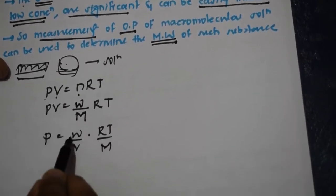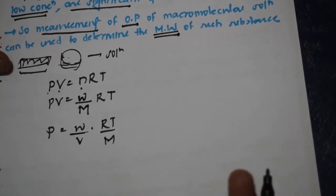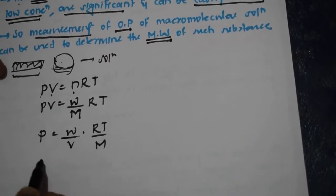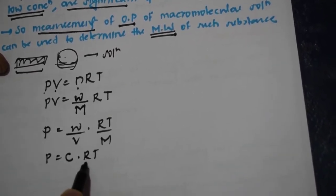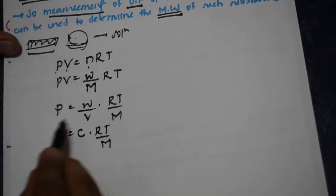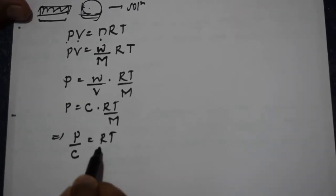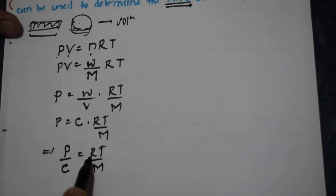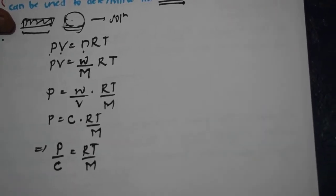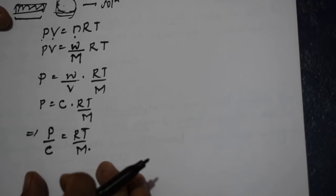W divided by V is weight divided by volume, that is grams per 100 ml. If we take volume as 100 ml, we get concentration into R into T divided by M. Therefore, this term can also be rearranged as P divided by C is equal to RT divided by M, where P is the pressure, C is the concentration, R is the gas constant, T is the temperature, and M is the molecular weight of the polymer.